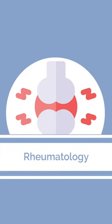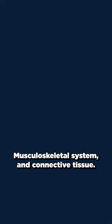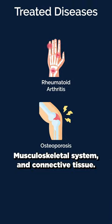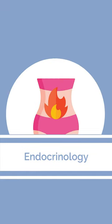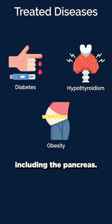Next, rheumatology deals with diseases of the joints, musculoskeletal system, and connective tissue. Next, endocrinology focuses on diseases of metabolism and the endocrine system, including the pancreas.